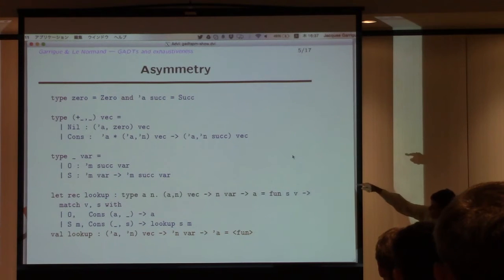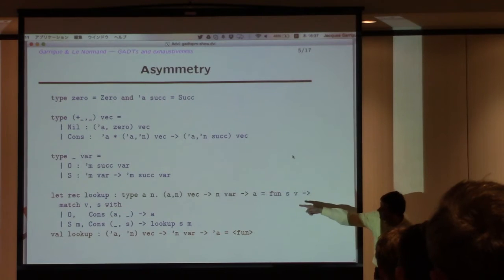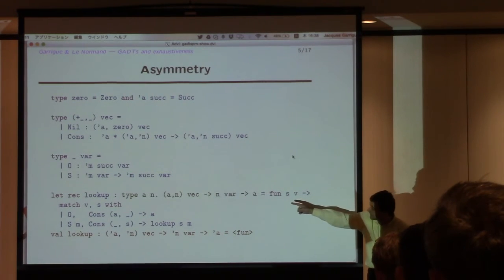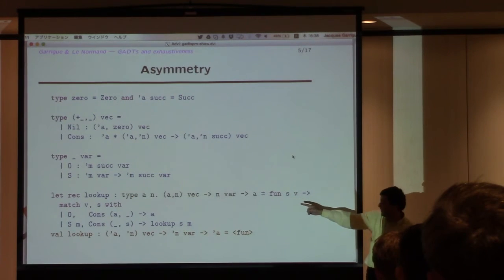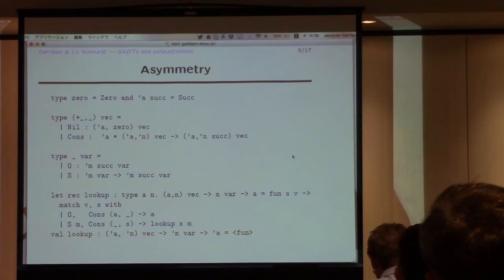This is the intent of this definition. So when I want to do lookup, then it's sufficient to have this definition. So I am taking a vector of length n, a variable which has an index which is guaranteed to be smaller than n. And then, I should be statically guaranteed to be able to access this variable in this context. If I write the pattern matching this way, this works.